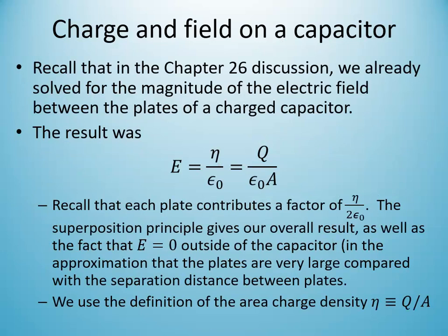We've already come across capacitors in our analysis of electric fields of infinite sheets — two oppositely charged infinite sheets close to each other, where the electric field between them is very strong and outside is zero. The electric field due to a capacitor is simply equal to the charge density on each plate divided by epsilon-naught, since each plate contributes η/(2ε₀) and they add between the plates and cancel outside.